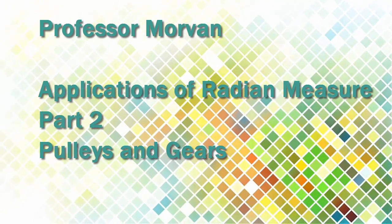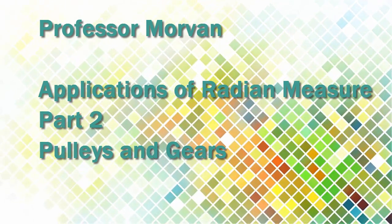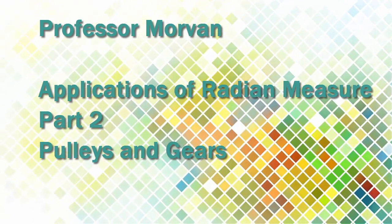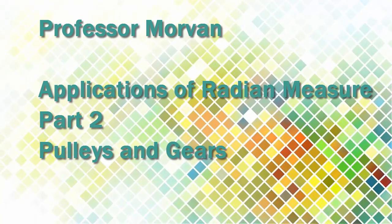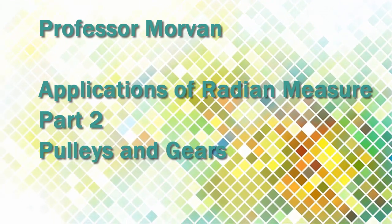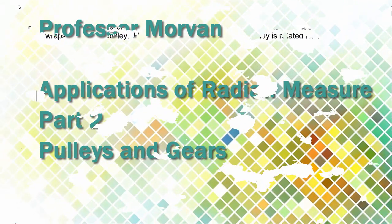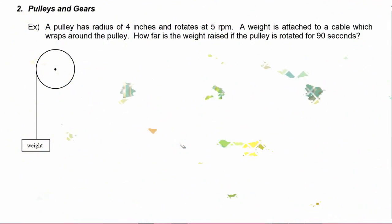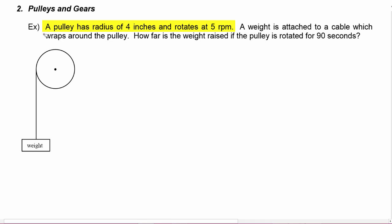In part two of our lesson on applications of radian measure, you're going to learn about pulleys and gears. In this first example, we're told that a pulley has a radius of four inches and rotates at five RPM.